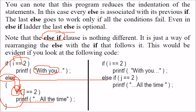So, if i is equal to 2, you print something. Else if, j is equal to 2 — this else if you have used instead of the nested else-if structure.